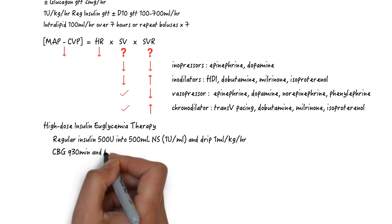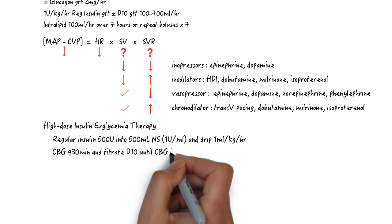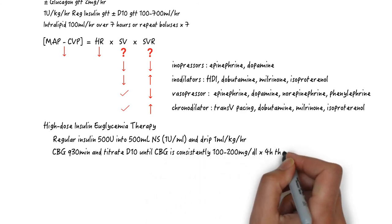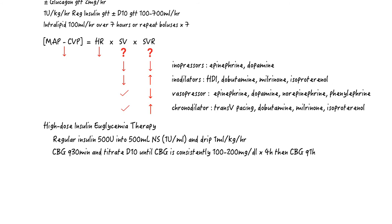If the CBG is low, i.e. less than 250, give 1 amp of D50. Else, check the blood glucose every 30 minutes and give D10 water to maintain euglycemia.